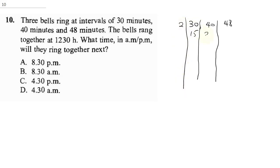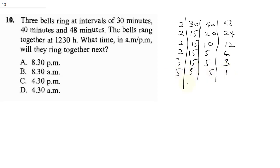Dividing through by prime factors: 2 into 30, 40, 48 gives 15, 20, 24. Dividing again gives 15, 10, 12. Again gives 15, 5, 6. Again gives 15, 5, 3. Then 3 into 15, 5, 1 gives 5, 5, 1. Then 5 into 5, 5, 1 gives 1, 1, 1. So the LCM = 2 × 2 × 2 × 2 × 3 × 5 = 240.